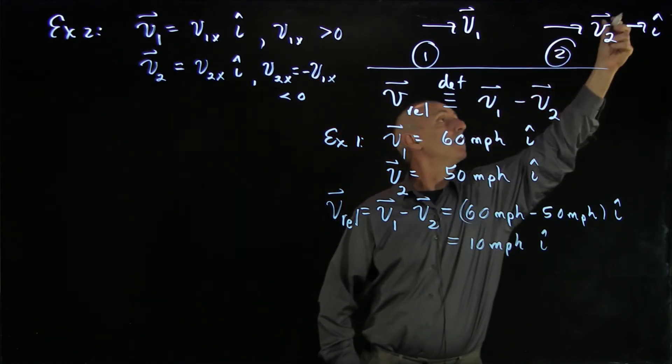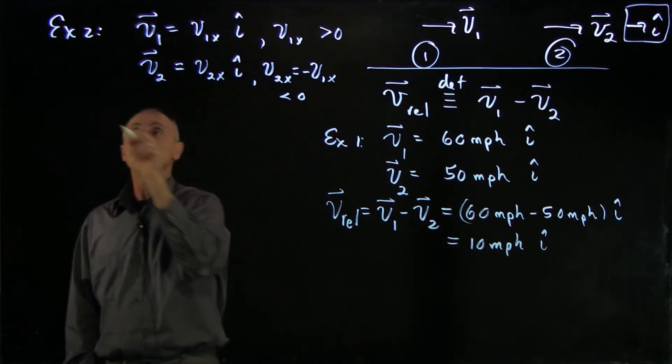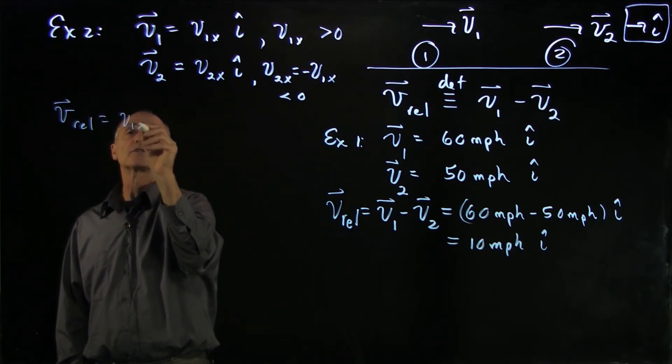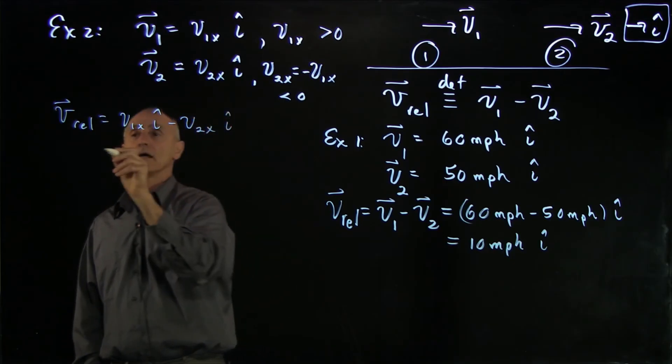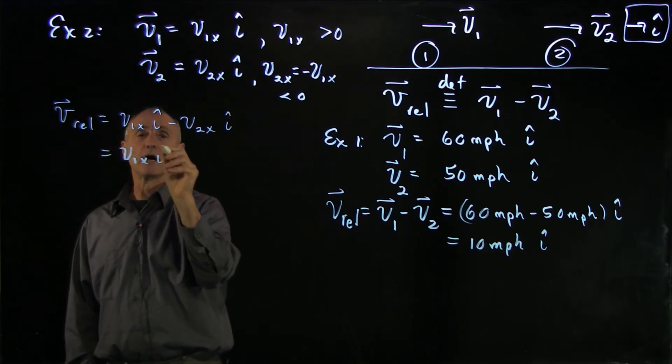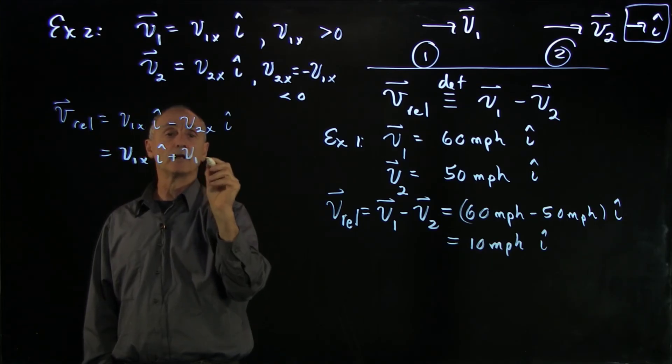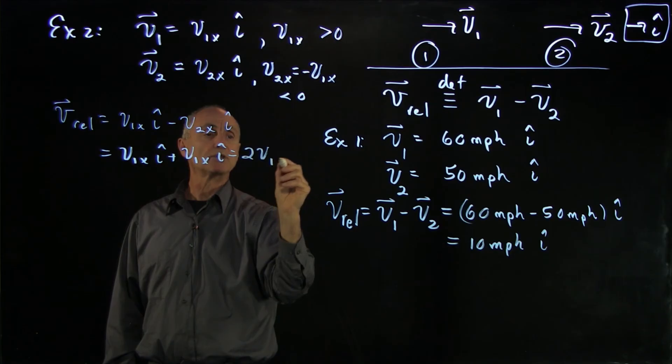The key arrow is the unit vector when we're writing components. And now the relative velocity in this case is v1x i-hat minus v2x i-hat. That's v1x i-hat minus minus, so there's another v1x i-hat.